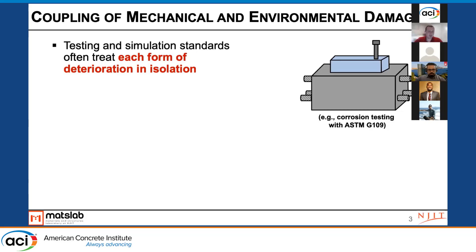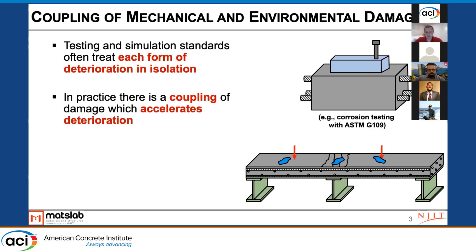When we look at test methods for evaluating different modes of deterioration, oftentimes they're evaluated in isolation. Typically when we do a corrosion test or a freeze-thaw test, we take a representative sample that is only undergoing that mechanism. We need to do that in order to benchmark how the material behaves in its best state, but we know that there are other coupling effects that can occur. For example, a bridge deck may experience live loading or temperature and shrinkage effects, which results in cracking on the surface. That cracking will accelerate the rate at which chlorides and aggressive materials move through the surface and ultimately deteriorate the concrete.